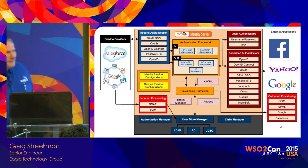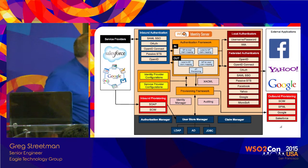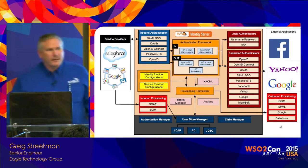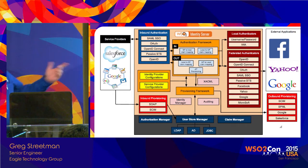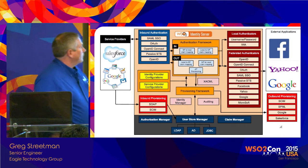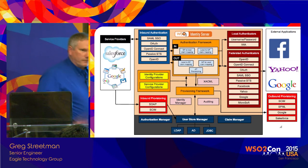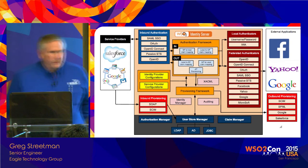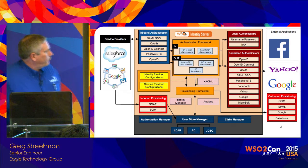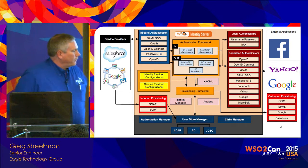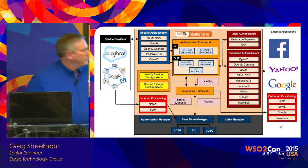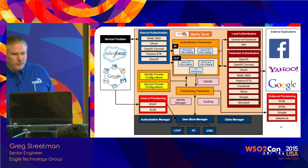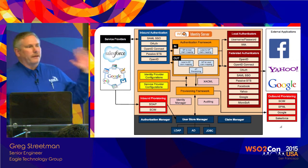I'm also borrowing slides — this is a page right out of the documentation for identity server. I wanted to bring this up because it shows all the different capabilities that are in there. You have service providers that use inbound authentication. The authentication framework is the key in between all of this — authenticators and identity providers. You have a provisioning framework and a lot of capability to plug in different user store managers. You can use LDAP, Active Directory, or a JDBC driver, or if you want to roll your own, you can in just about any of these areas.